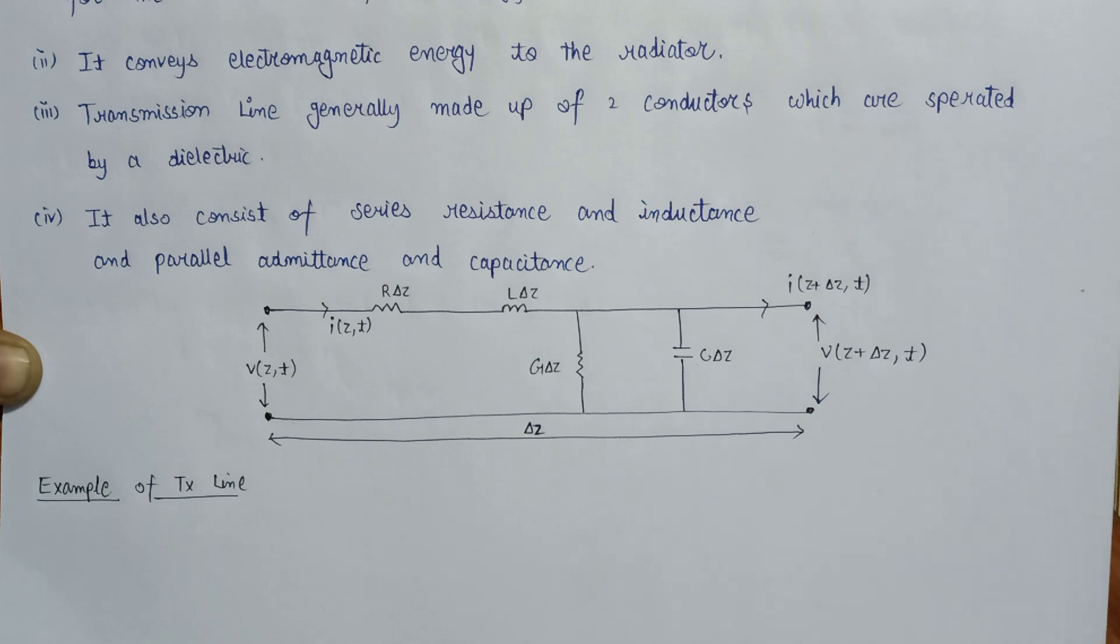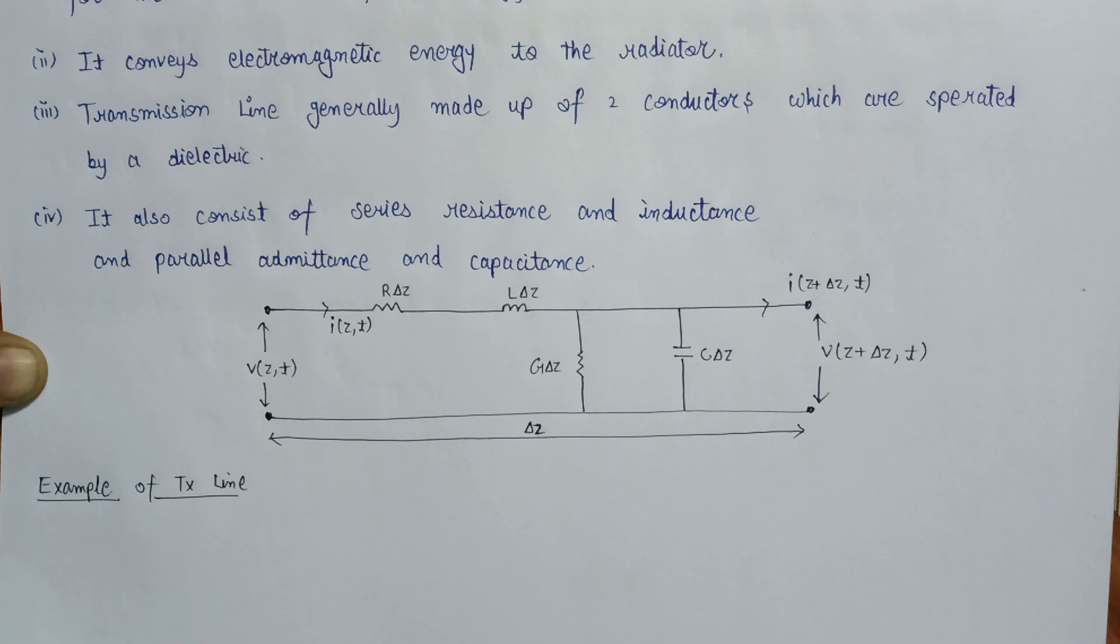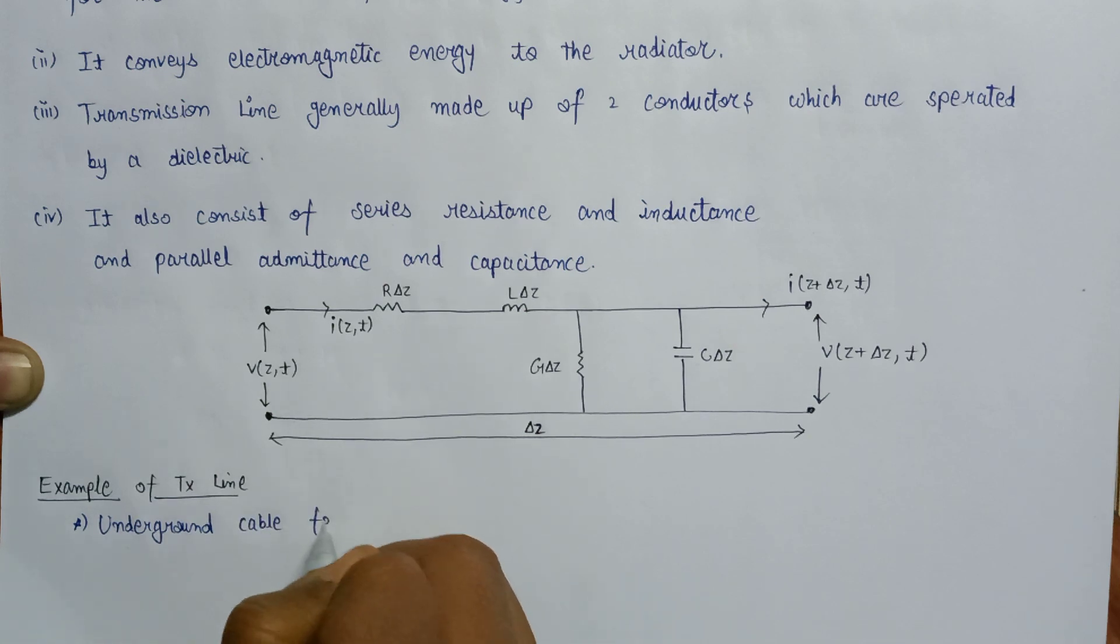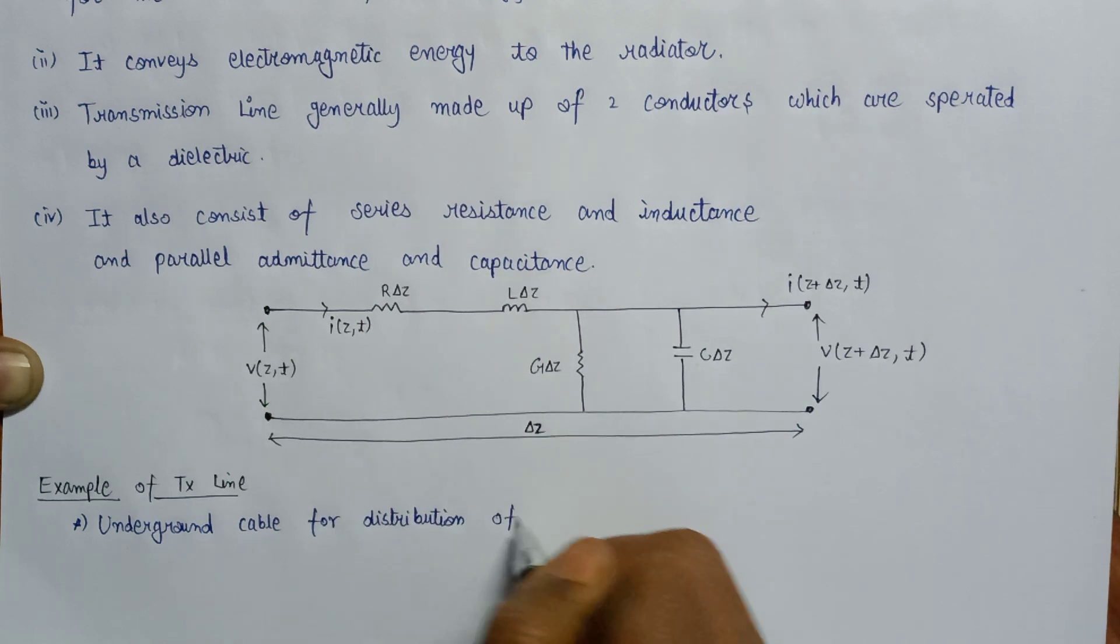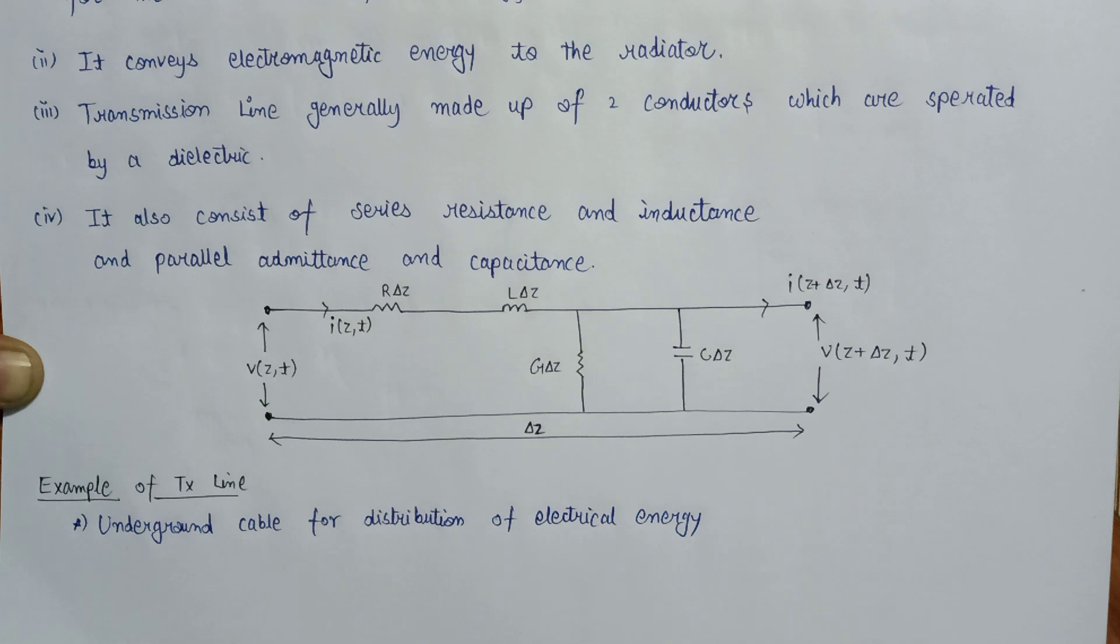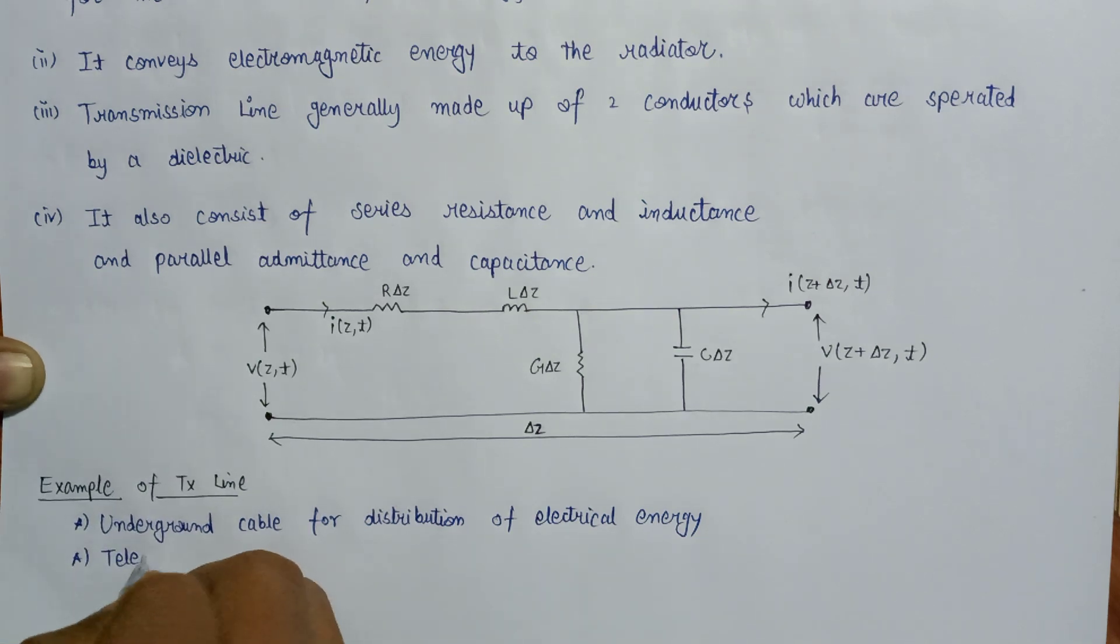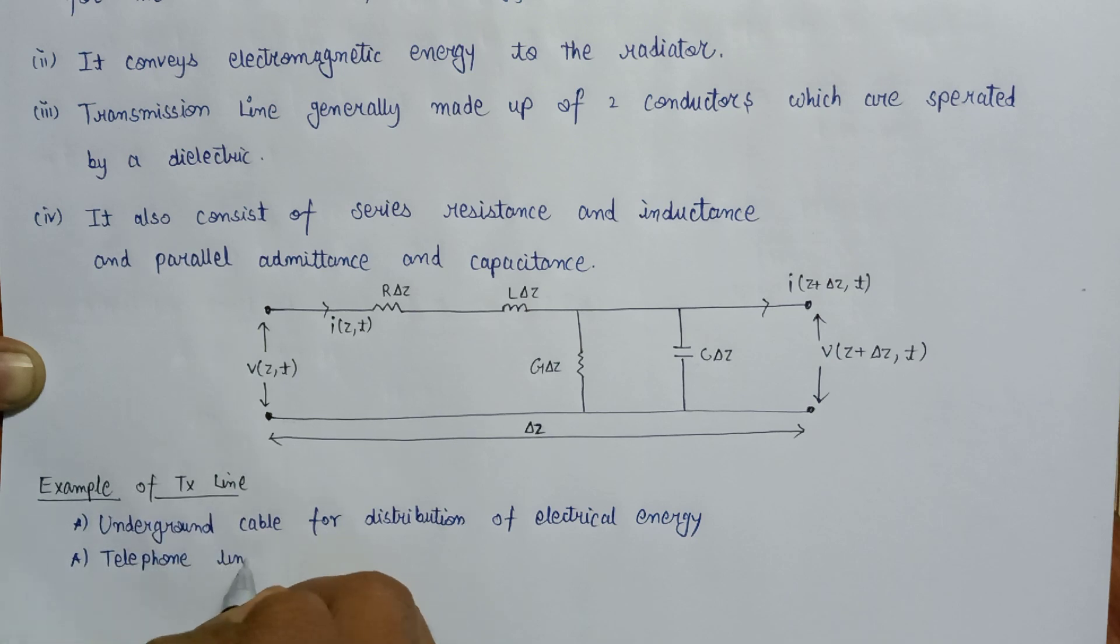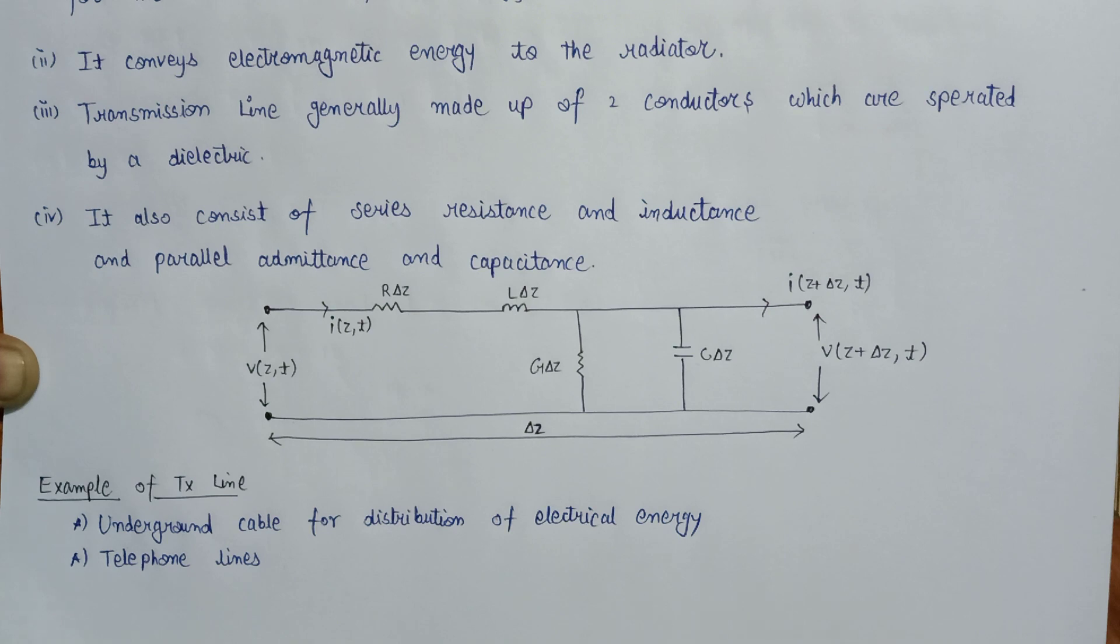The underground cables which are used for the distribution of electrical energy is also an example of transmission line. The telephone lines running on the road side are also an example of transmission line. And the wire connecting the antenna to the television receiver is also an example of transmission line. So, we all are seeing the example of transmission line in our surroundings also.